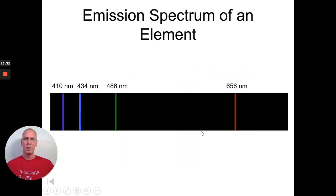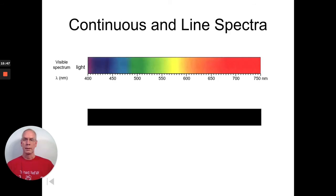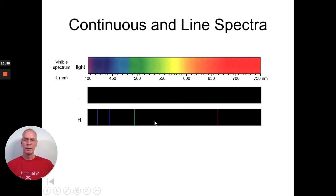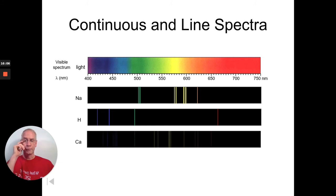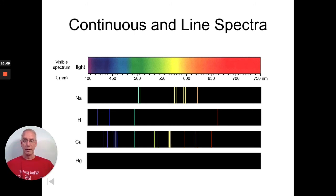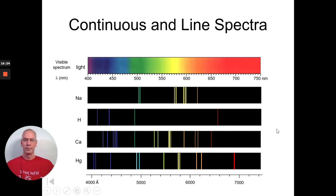Hopefully, you're getting the idea of what it means to be excited and how we can identify an element based on its emission spectra. Because, it's unique for each element. There's the continuous line spectra for hydrogen. Here's what it would look like in terms of its emission. There's hydrogen. There's sodium. What it's going to look like. See, it's a little bit different, isn't it? And, then, here we have calcium. And, then, we have mercury. So, every element is going to give a unique spectrum. That's the key. Because, they're all starting with a unique electron configuration. So, when they get excited and fall back down to that unique spectrum, they're going to be slightly different each time.